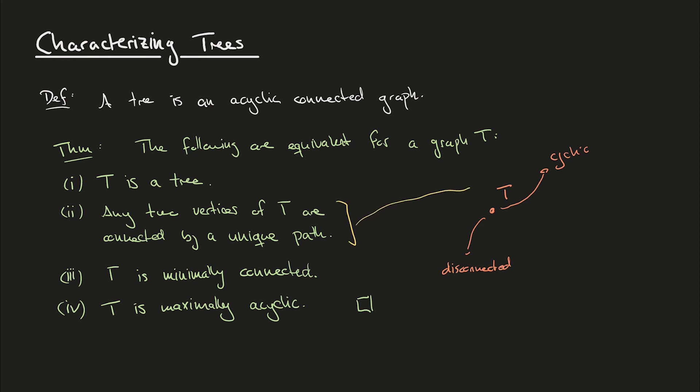This fact is encapsulated by the statement that there exists a unique path connecting any two vertices in T. I hope this theorem has given you some intuition for thinking about trees. In what's to come, it will be very useful that we can switch between any of these statements when dealing with trees. In the next video, we'll be proving some more facts about trees, including how to recognize trees based solely on their number of vertices and edges.